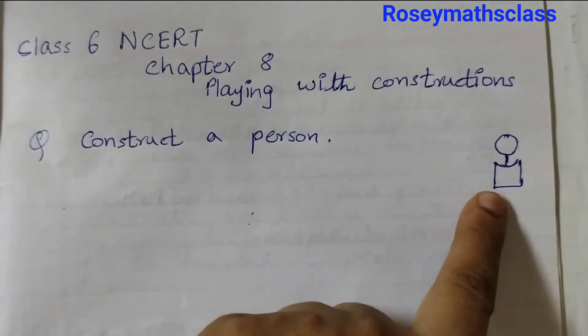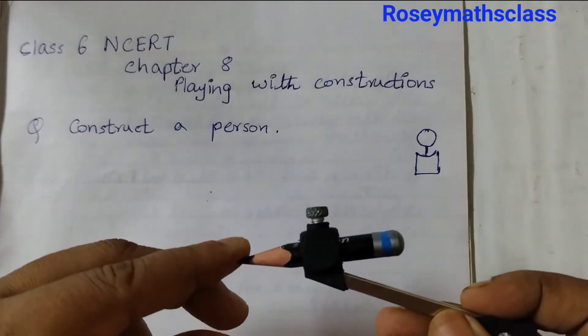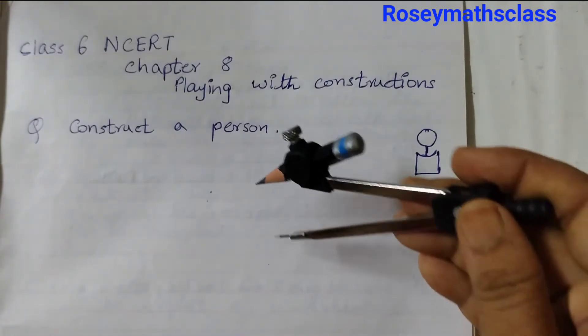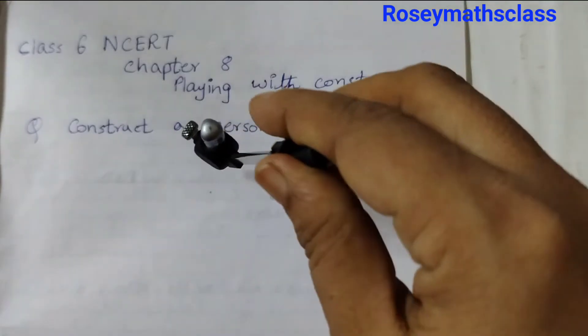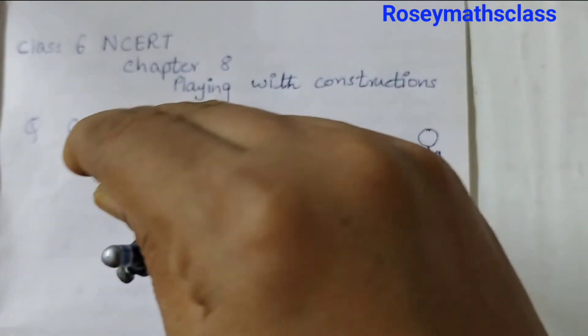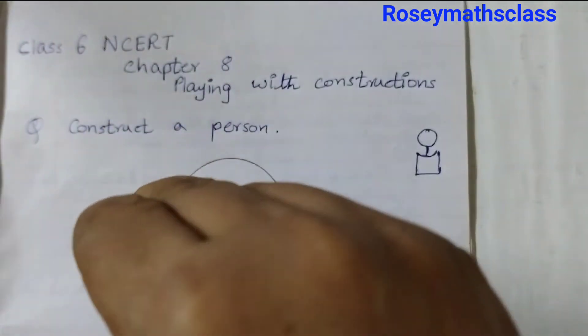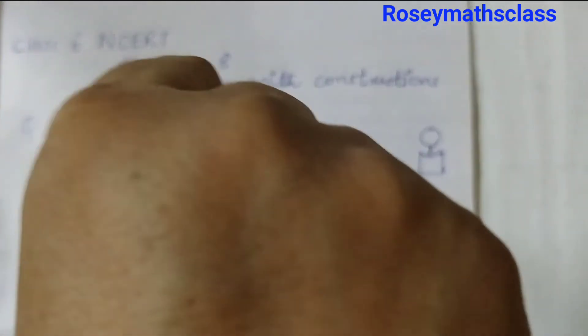Let's draw this person. Take your compass, choose any measurement or length, and draw a circle. Place the metal point here and draw a circle. This is the head of the person.